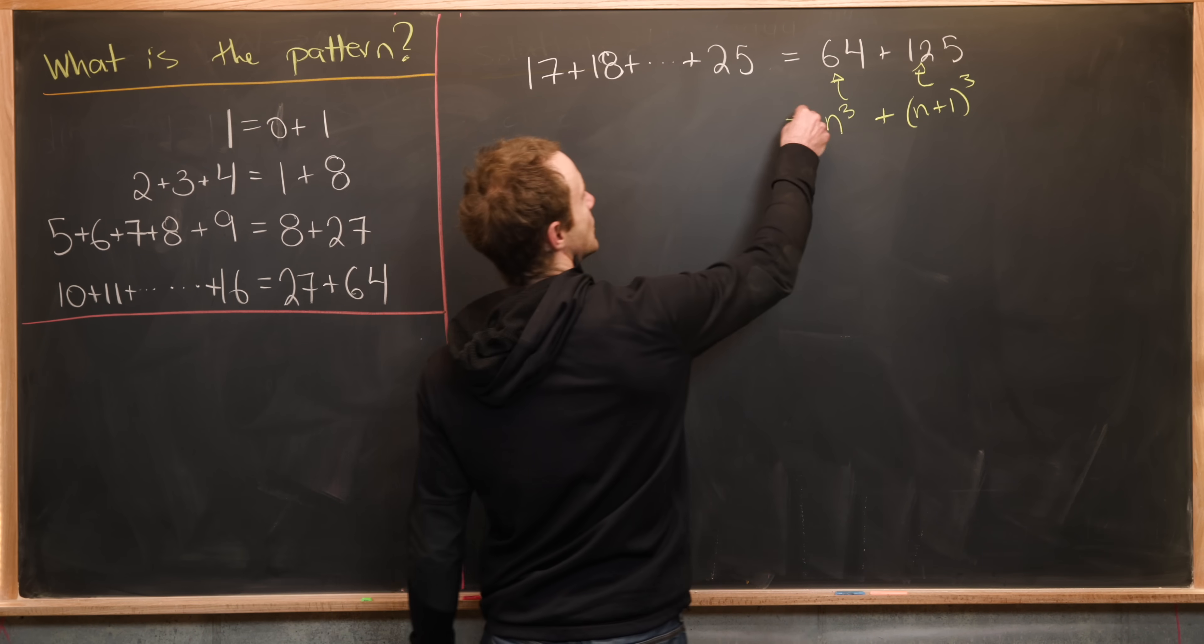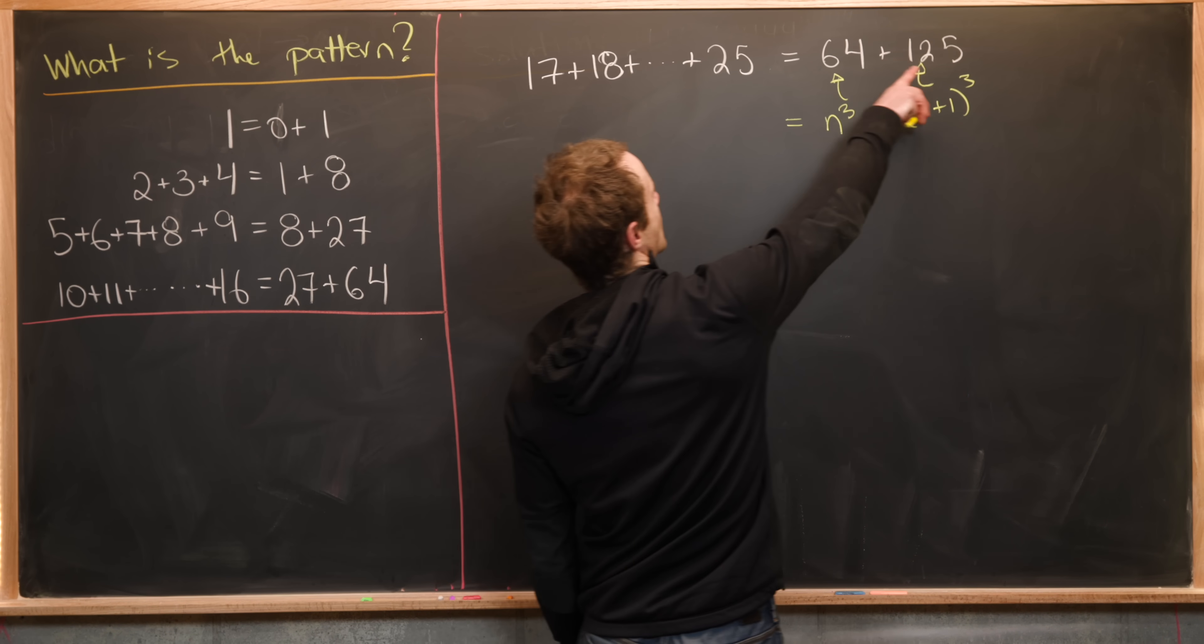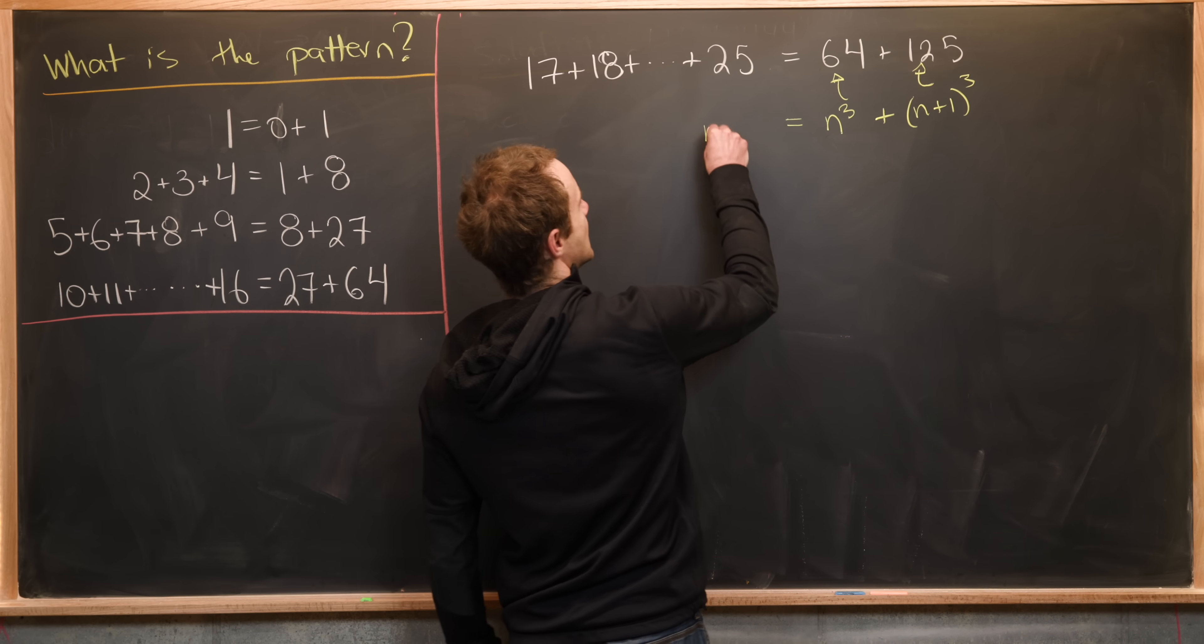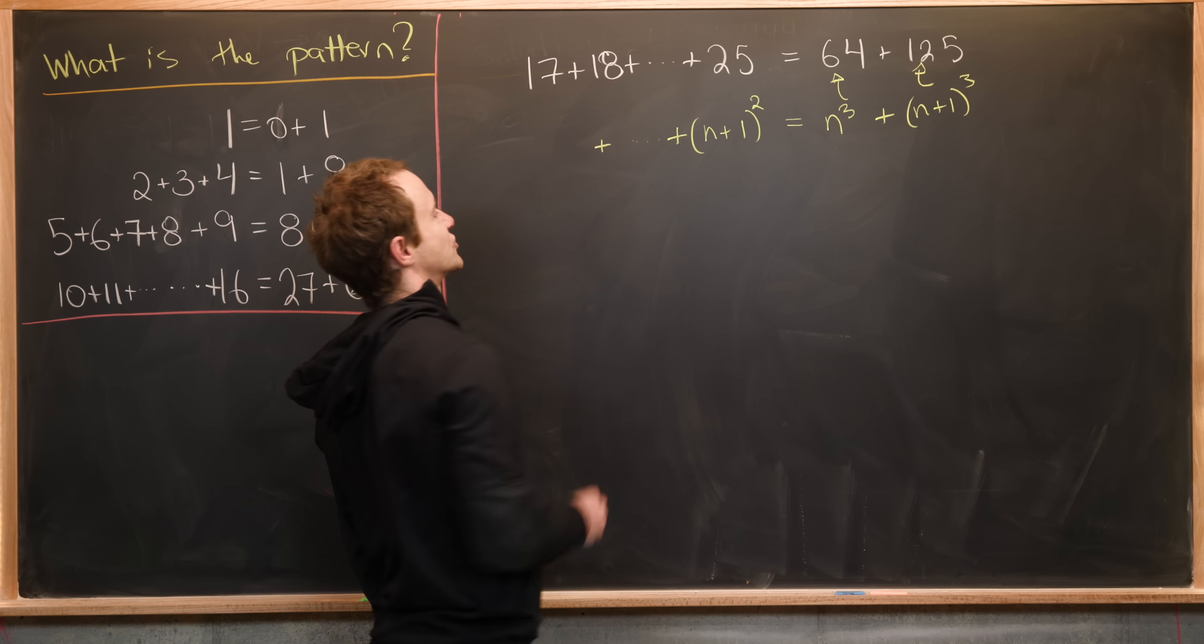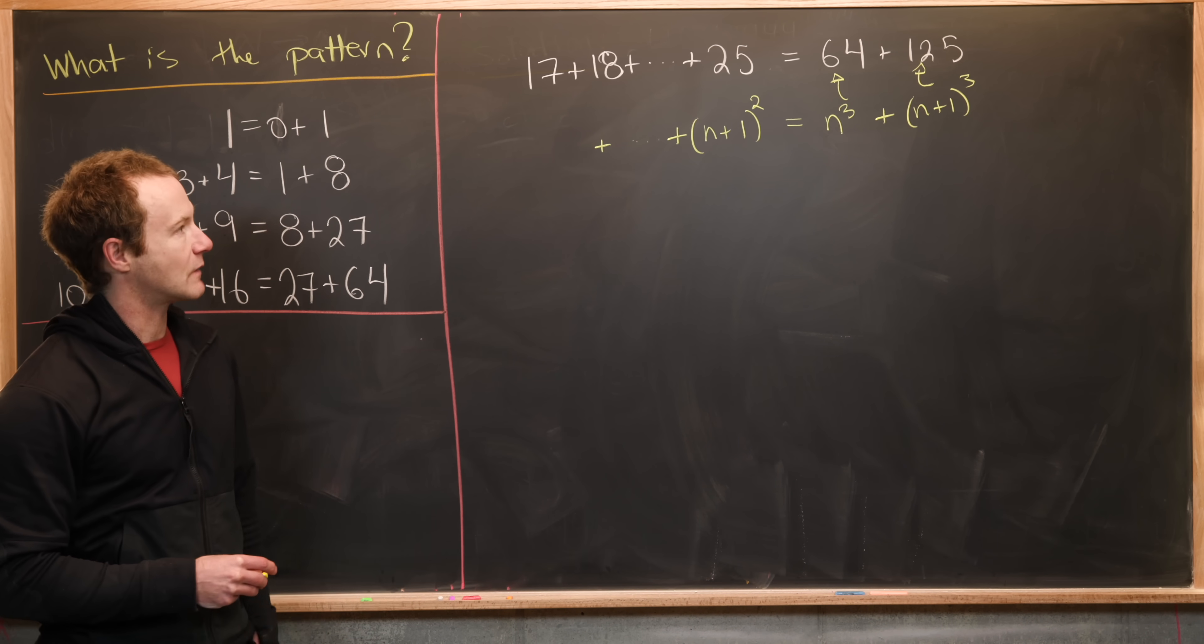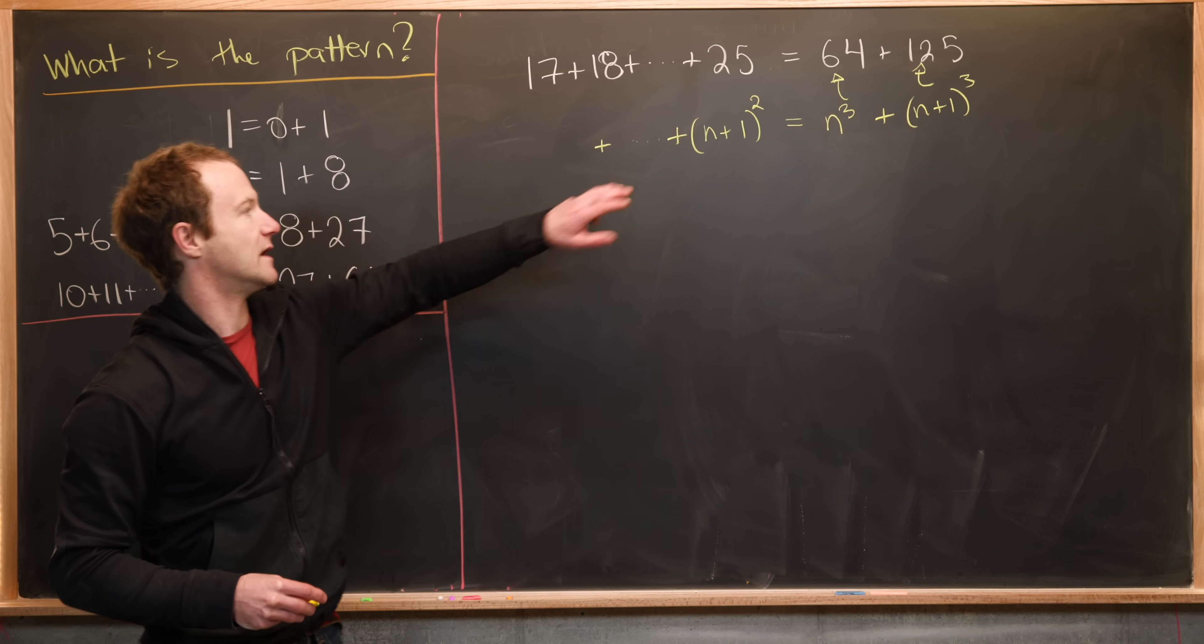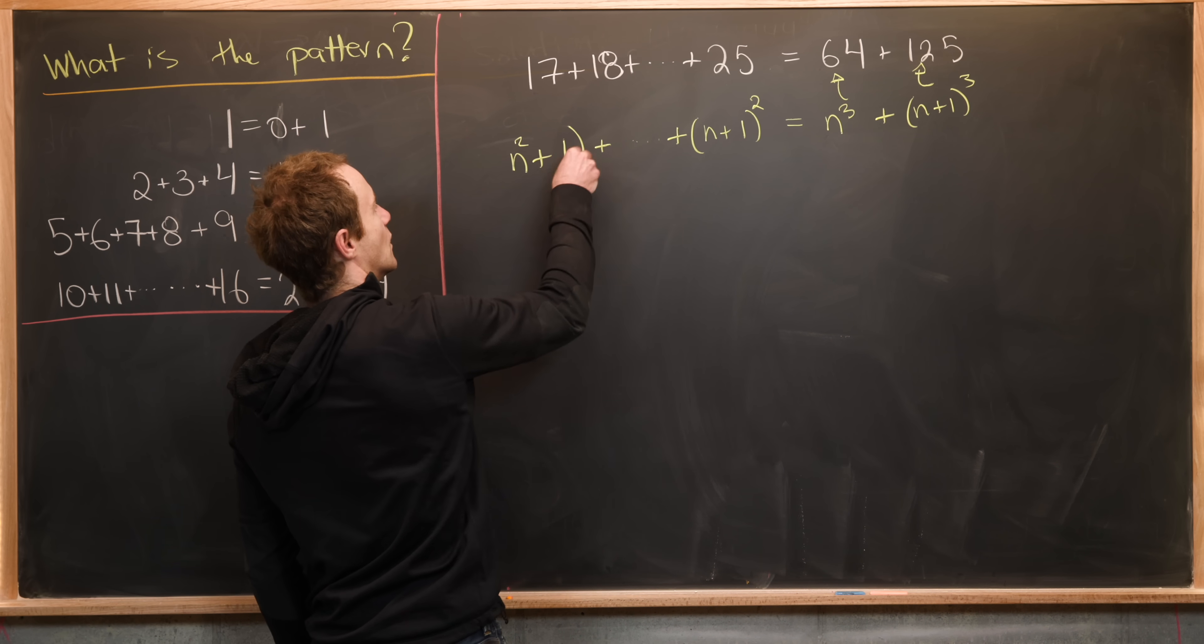Now next, notice that on the right hand side, we're ending at the perfect square corresponding to this perfect cube. So that would be n plus 1 squared. Now we just have to figure out what we are starting at. And we're starting at the perfect square plus 1 that is previous to this. In other words, we're starting at n squared plus 1.